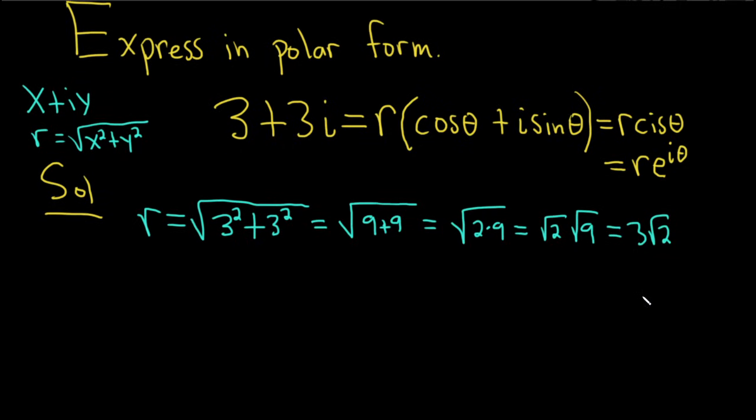So after I find r, I always go back and then I plug it back into this. So 3 plus 3i is equal to r, which is 3 root 2, parentheses, cosine theta, plus i sine theta.